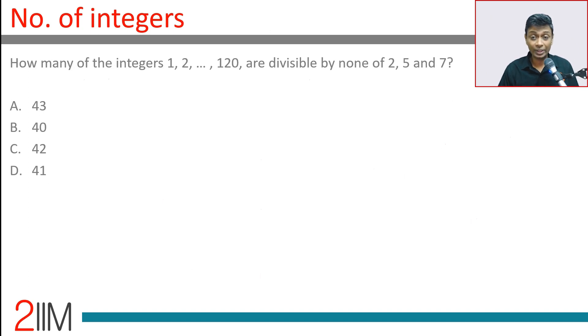How many of the integers 1, 2, 3, 4... 120 are divisible by none of 2, 5, and 7? We need to find the set of elements divisible by 2, divisible by 5, divisible by 7, then find the union of these.